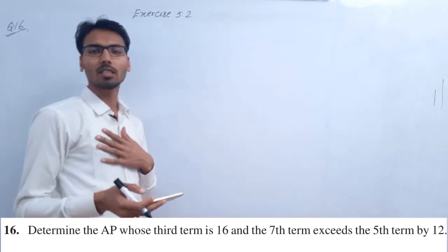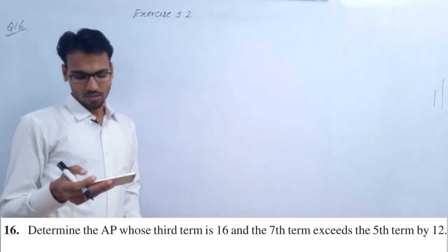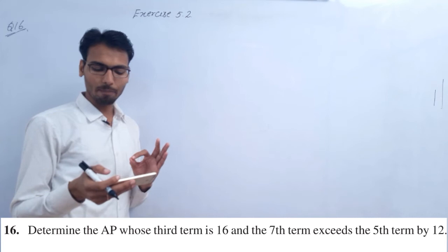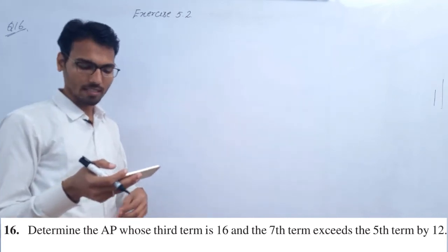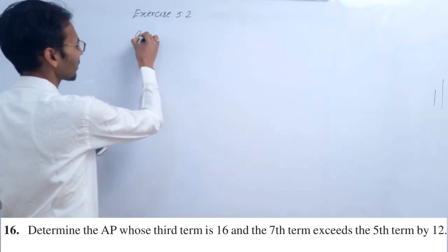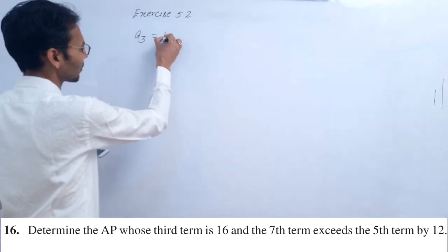Hello everyone, next is question number 16. Determine the AP whose third term is 16. I am going to find out that the third term is 16, which means a₃ is equal to 16, first thing.